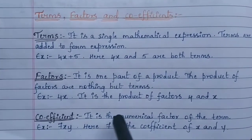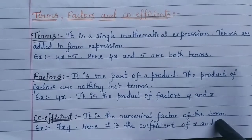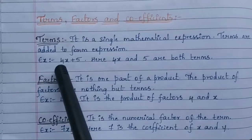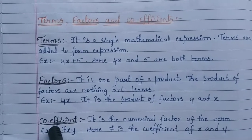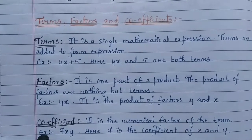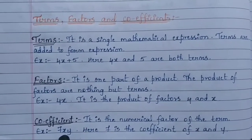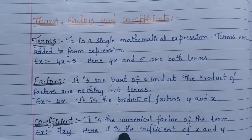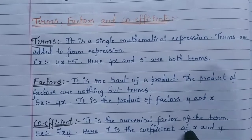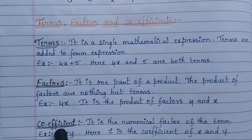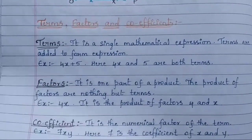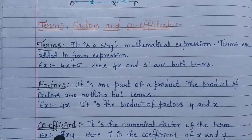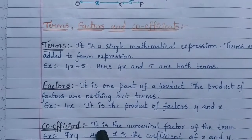A coefficient is the numerical factor of the term. For example, in 7xy, the numerical factor is 7. So 7 is the coefficient of xy. When we ask for the coefficient of xy, the answer is 7.